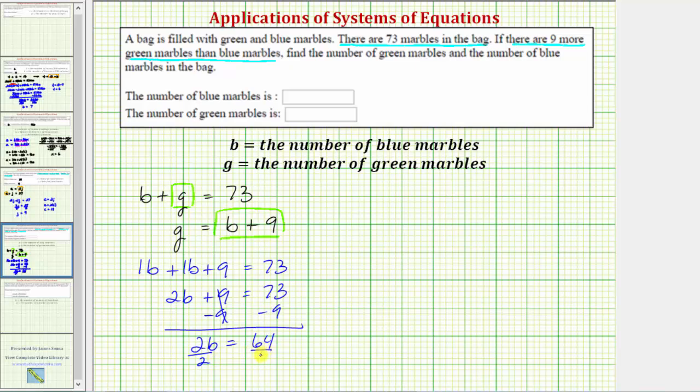Dividing both sides by two to solve for b, we get b equals sixty-four divided by two, which equals thirty-two. So now we know there are thirty-two blue marbles.